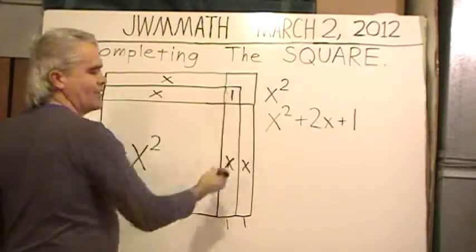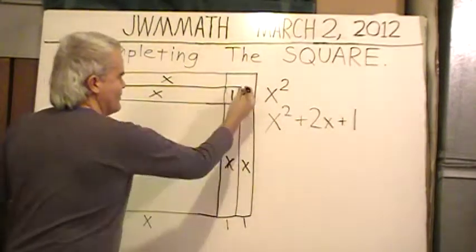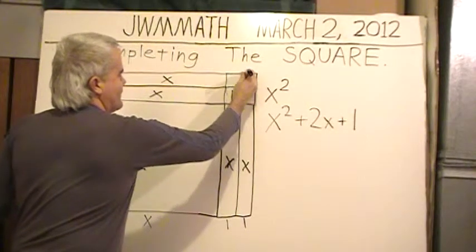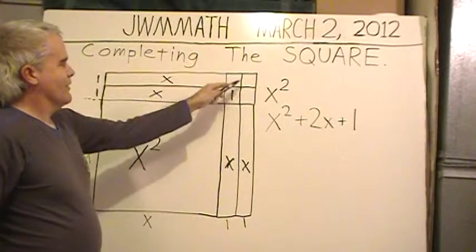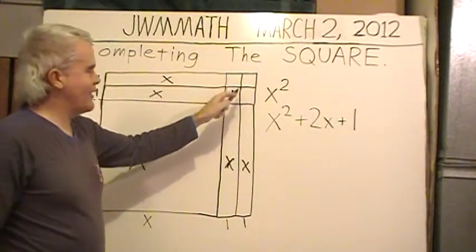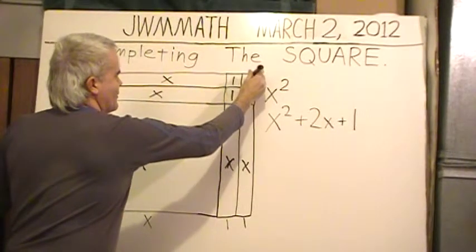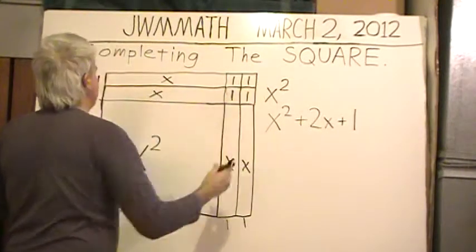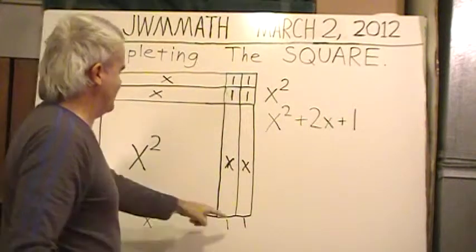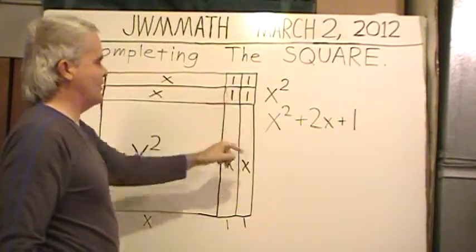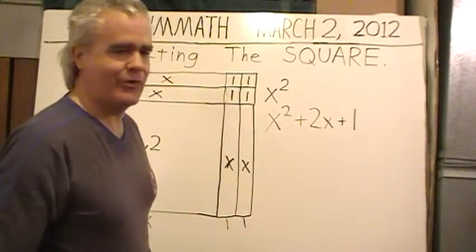We are going to finish it off, and that is going to be a 1 up there. So we have a larger square. So geometrically, we have the original x squared, and then plus an x, plus another x, and plus a 1.